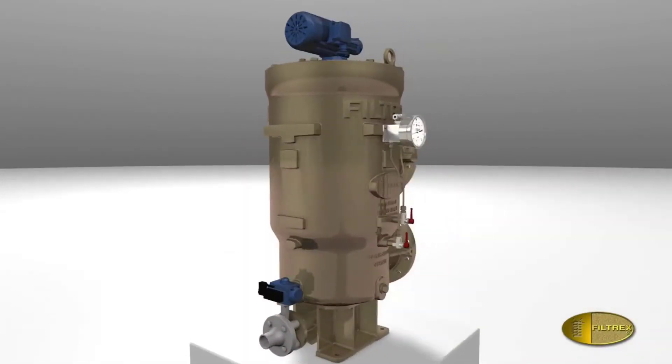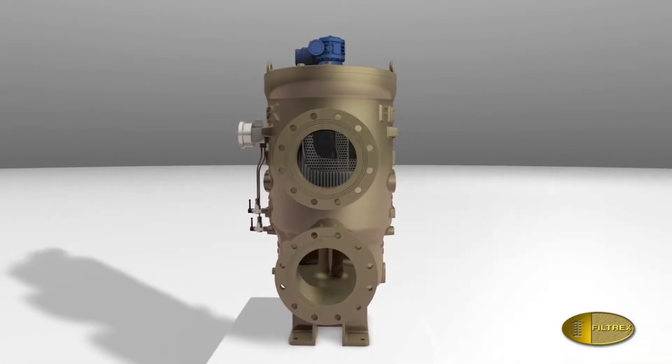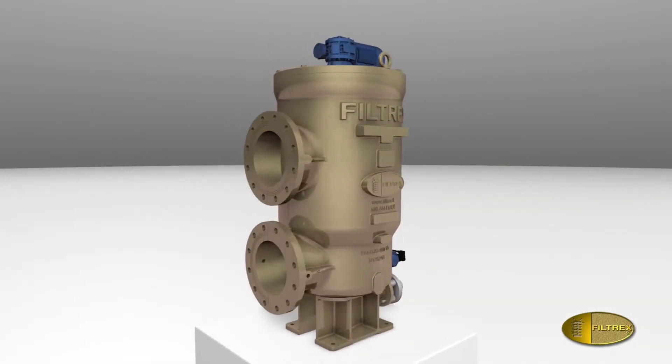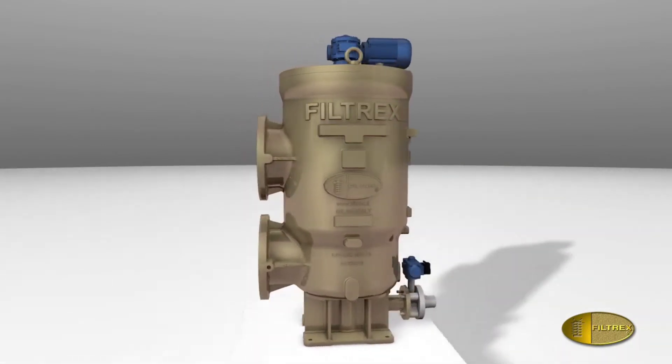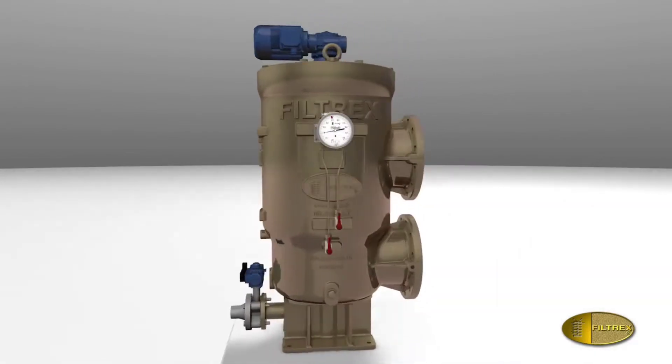Filtrex ACB is an automatic backwashing filter for water operated by electric power. Cleaning is performed using the filtered water with no interruption in the filtration process.